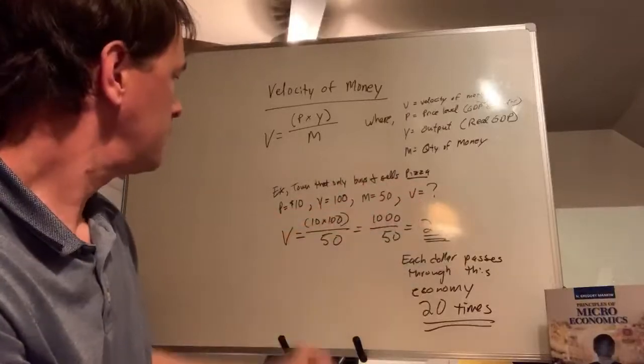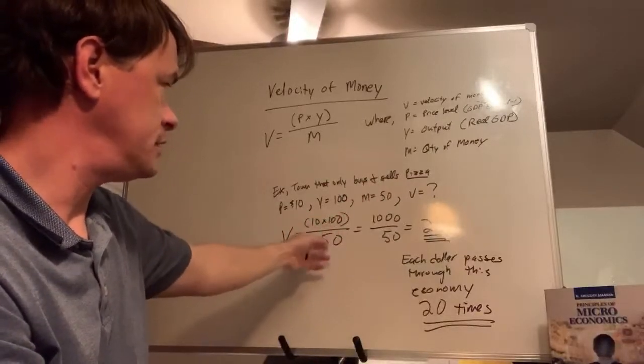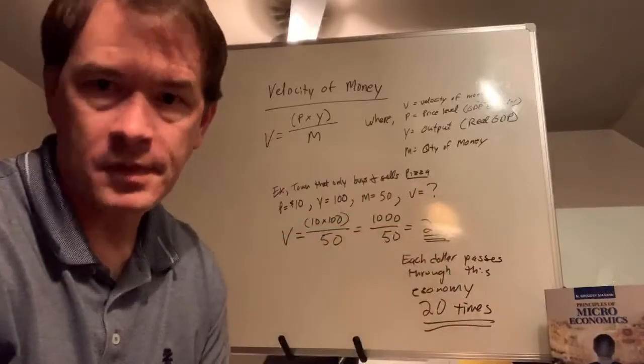V equals 10 times 100 (P times Y) divided by 50 (which is M). We get 1,000 over 50, and we get an answer of 20. What does that mean?